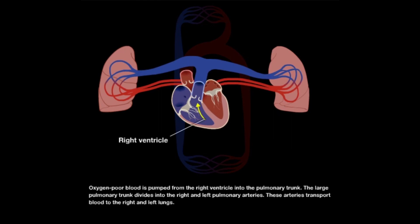Oxygen-poor blood is pumped from the right ventricle into the pulmonary trunk. The large pulmonary trunk divides into the right and left pulmonary arteries. These arteries transport blood to the right and left lungs.